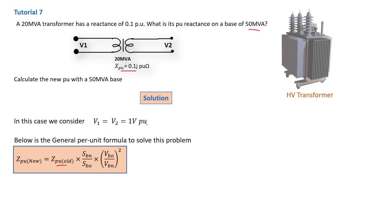VB old, now in this case, it's not given. So we consider one volt for V1 and V2. So which means VB old and VB new, they will both be equal to one volt. At this point, we just replace into the formula and we have an answer. That is 0.25j per unit.